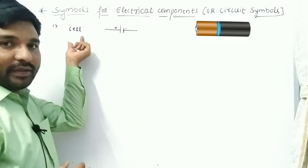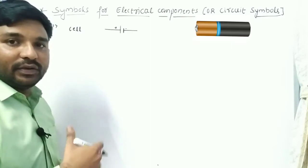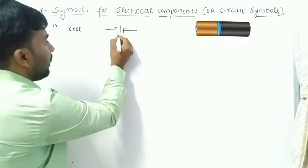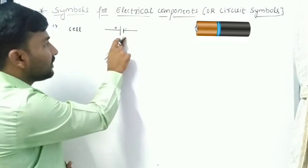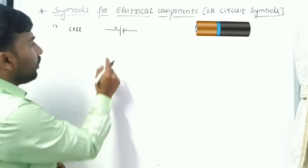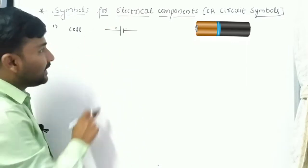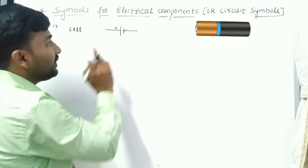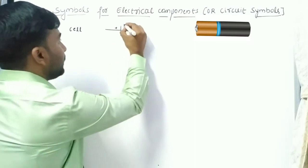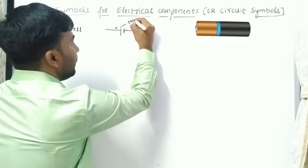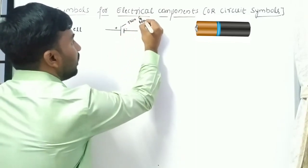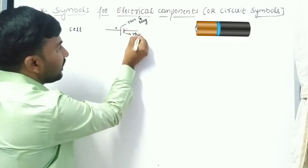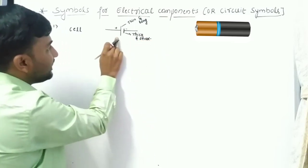A cell is the device which converts chemical energy into electrical energy. The circuit symbol for the electric cell has two parallel vertical lines: one is thin and longer — that is the positive terminal — and the other one is thick and short — that is the negative terminal of the cell.